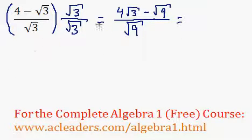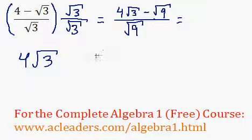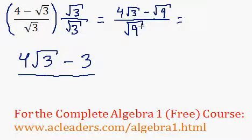Okay, now, up top, 4 root 3, we can't really do anything to that, and minus root 9, root 9 is just 3. And we have root 9 down at the bottom, which is just, of course, also 3.